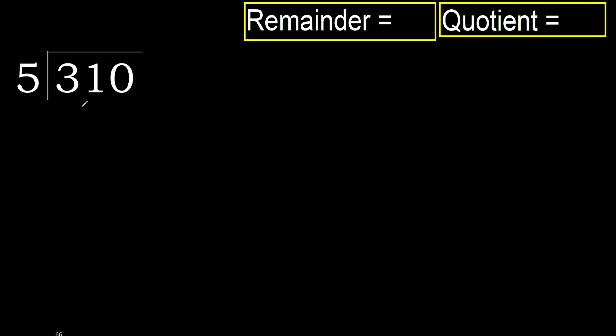310 divided by 5. 3 is less, therefore next. 31 is not less, therefore with 31.